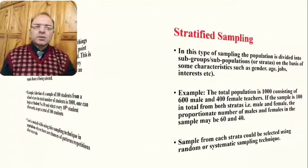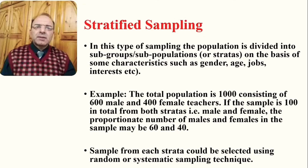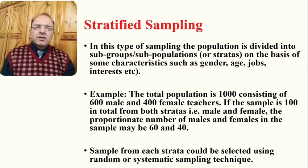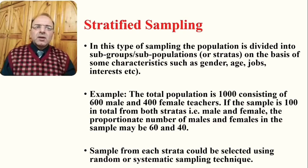Next is the stratified sampling technique. In this type of sampling, the population is divided into subgroups or subpopulations — also called strata — on the basis of certain distinctive characteristics or qualities, such as gender, age, job, or interest.